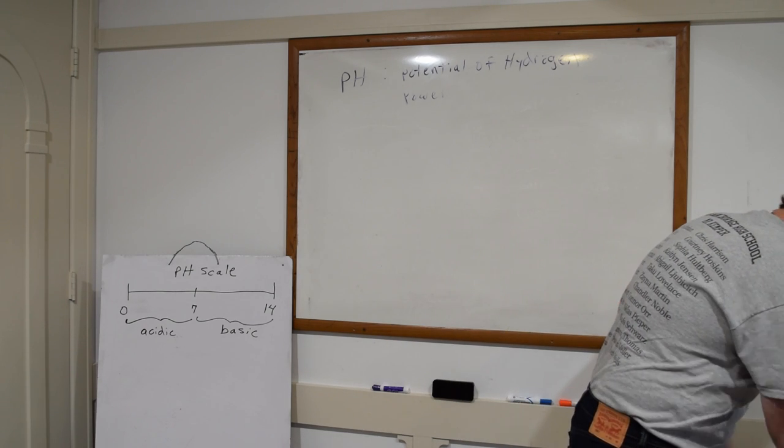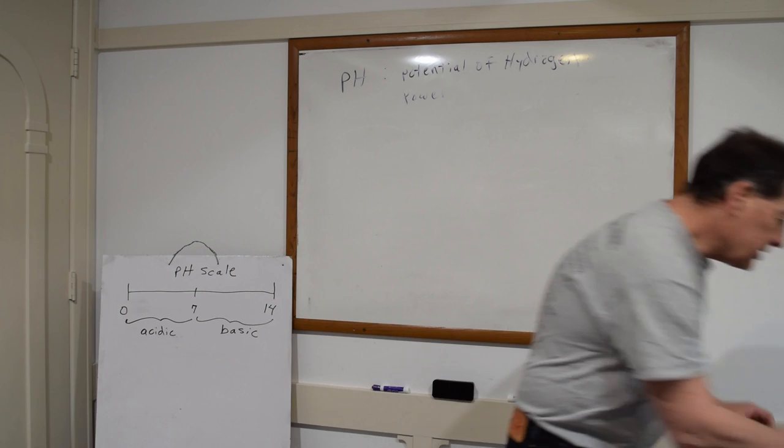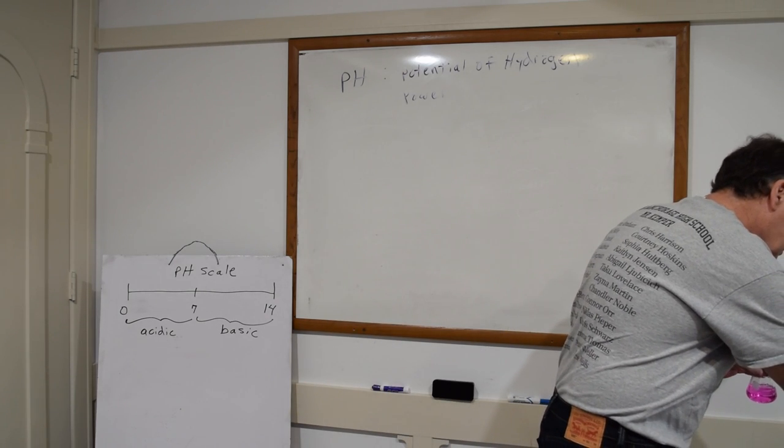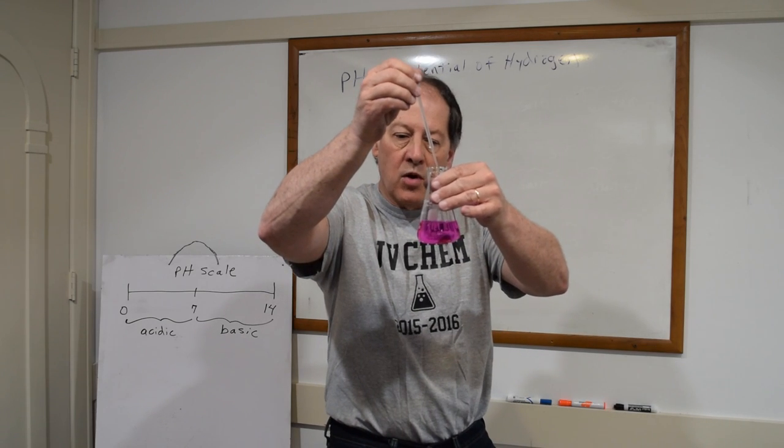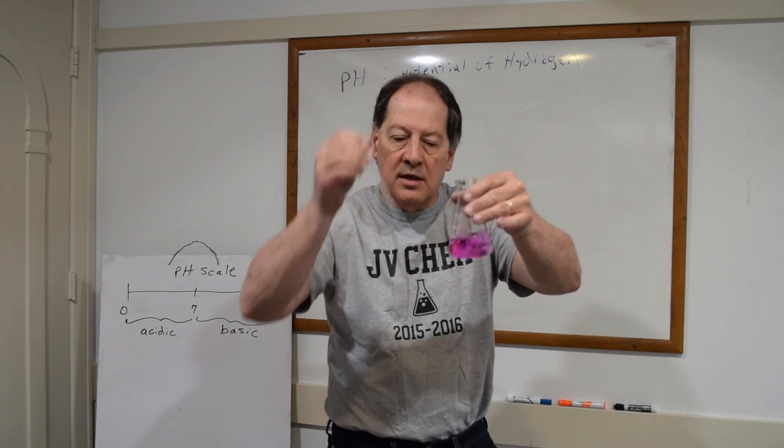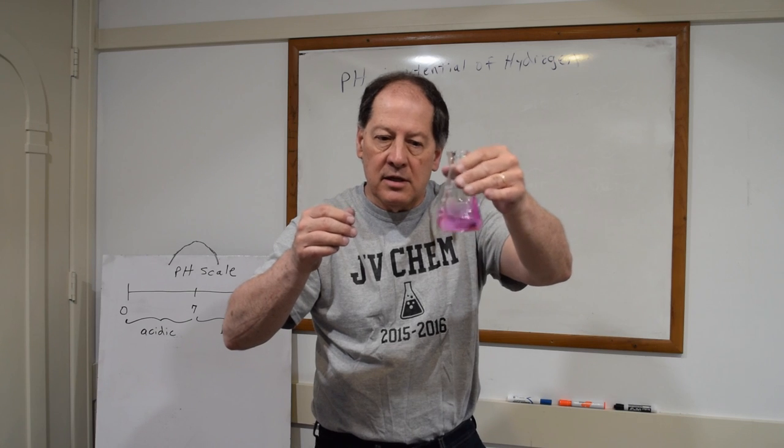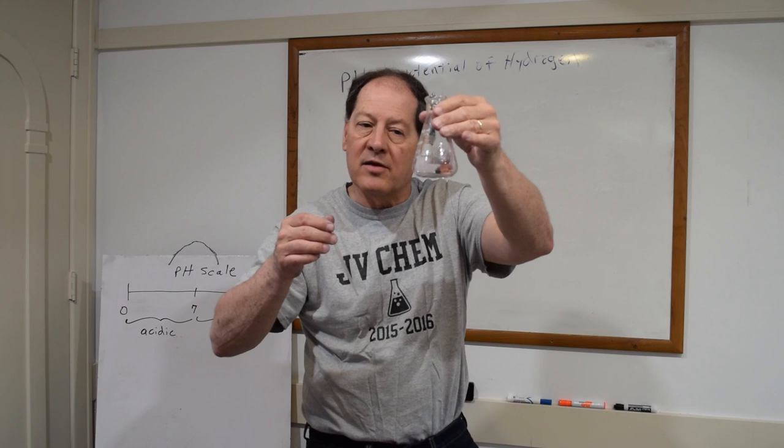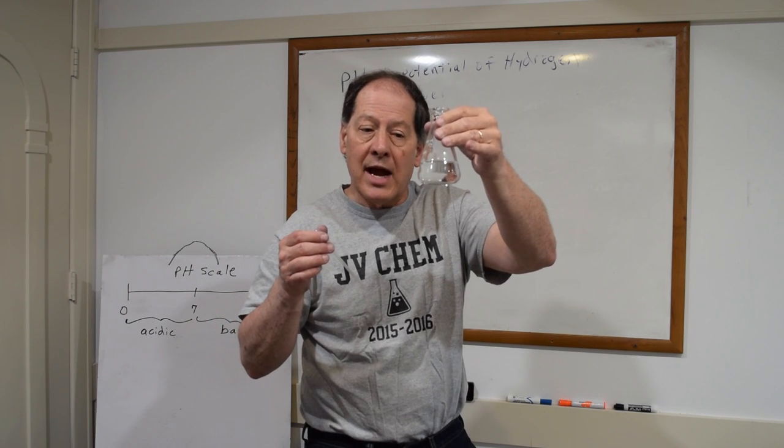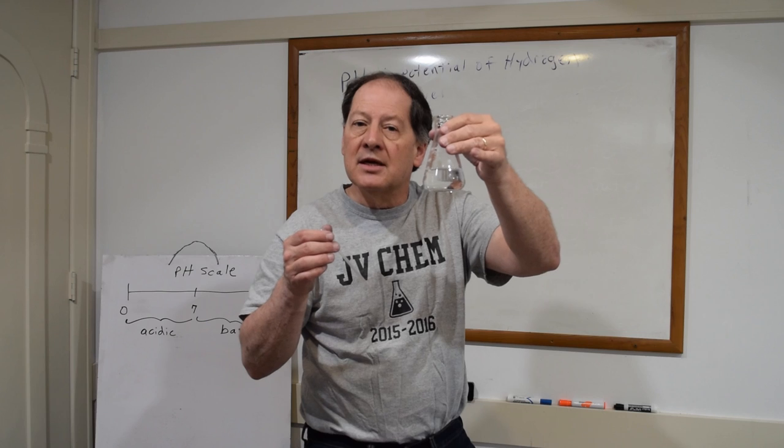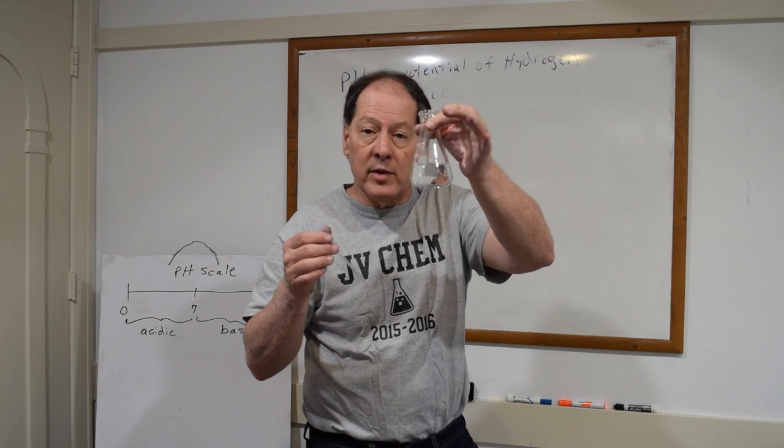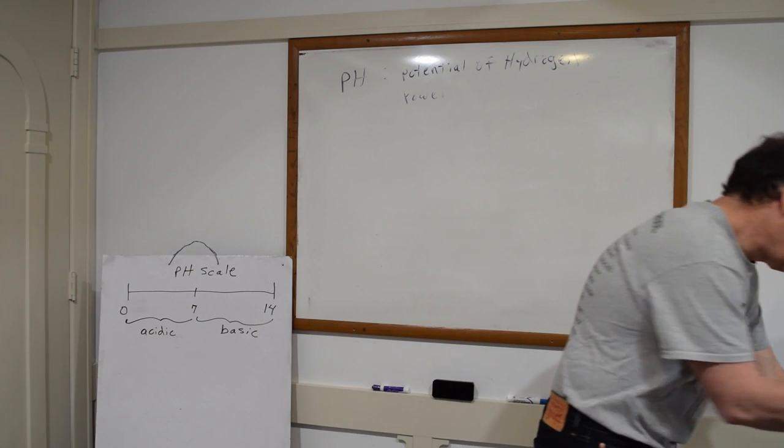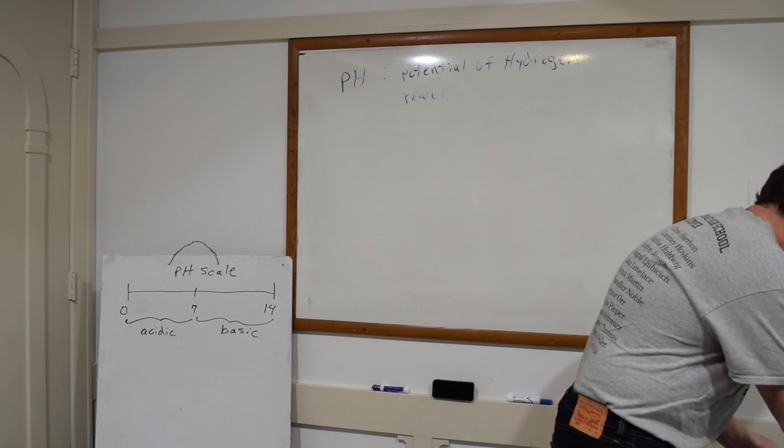Now just real quick, if you want to see a neutralization reaction, remember we formed water. So let's add some acid to the water. Swirl it around. Notice it's a lot less pink because I'm adding acid and now the pink finally goes away. So I just did a neutralization reaction where the acid and the base are reacting together and forming a neutral solution water in addition to the salt.